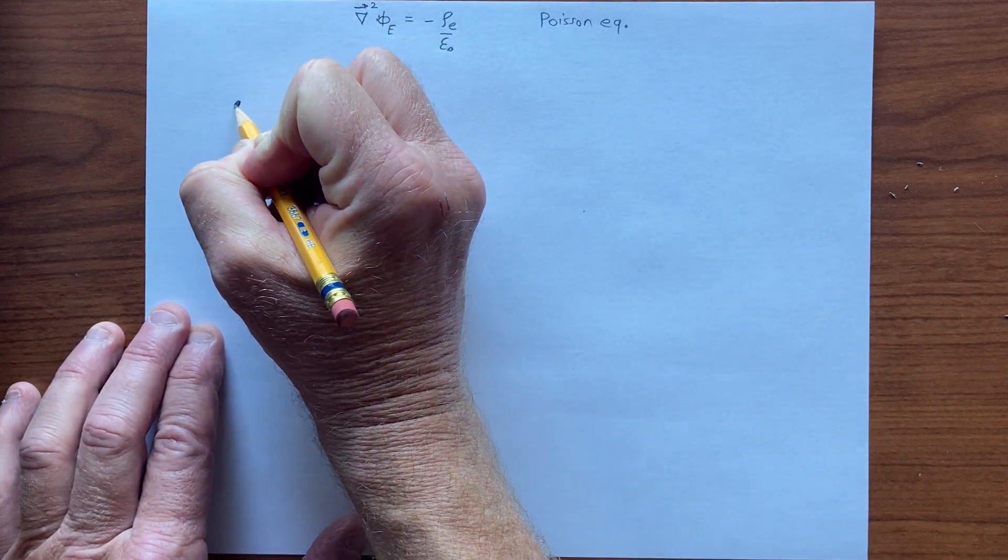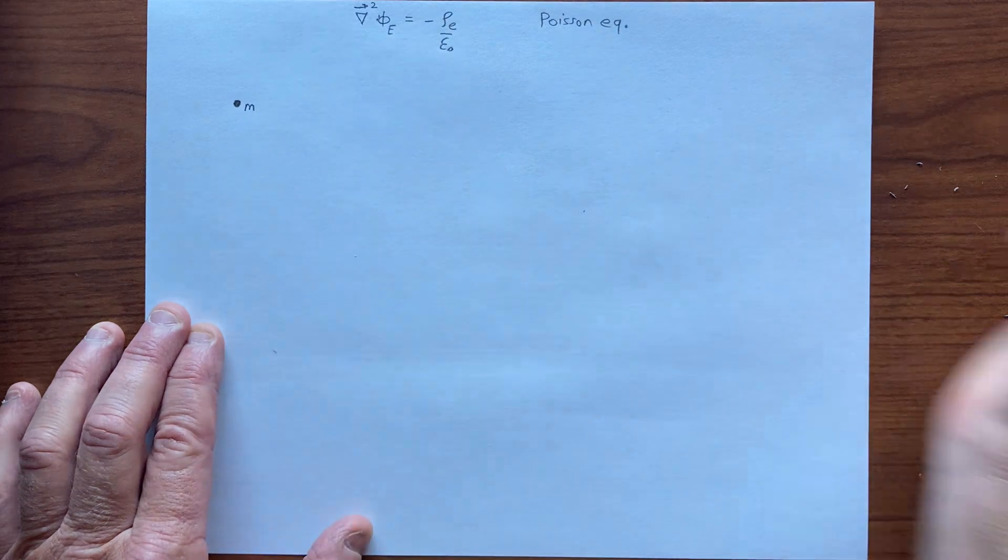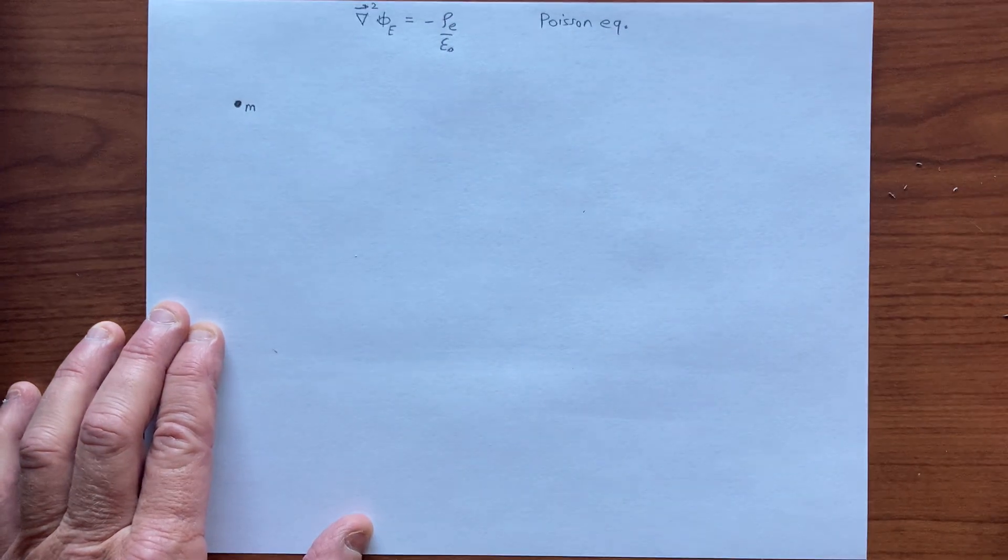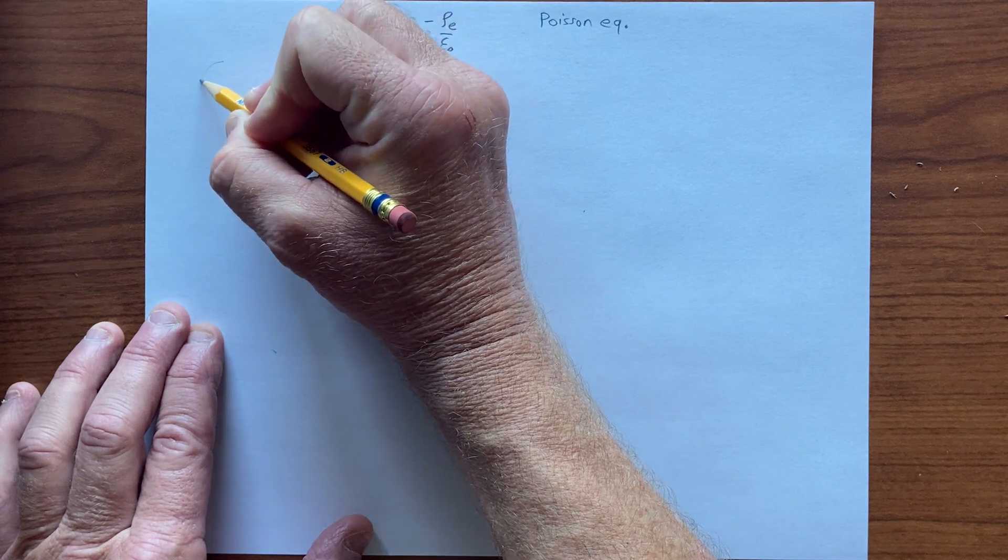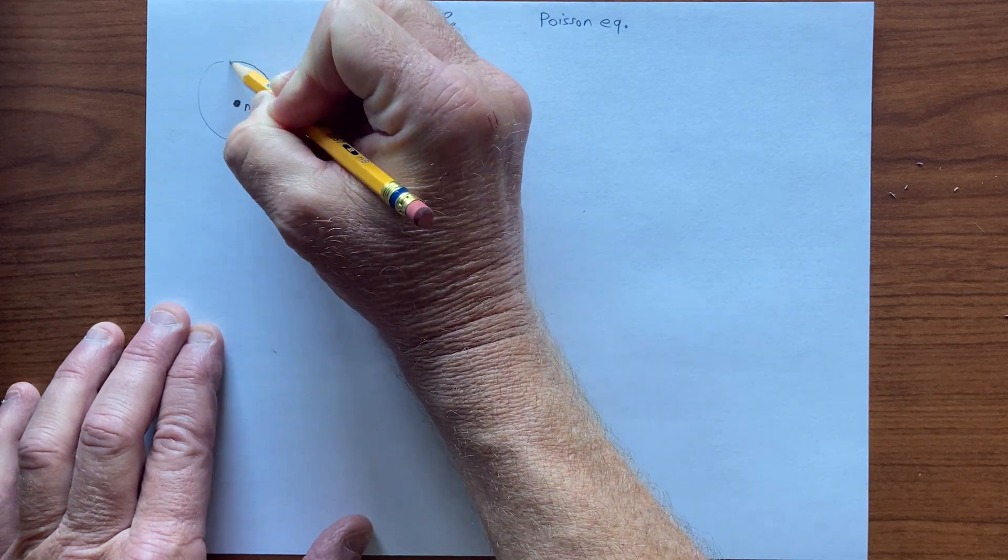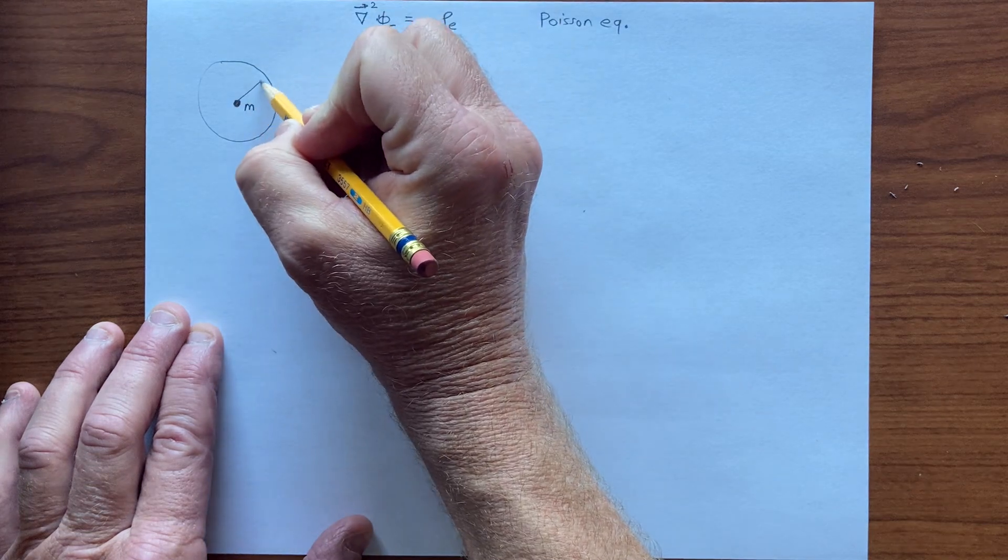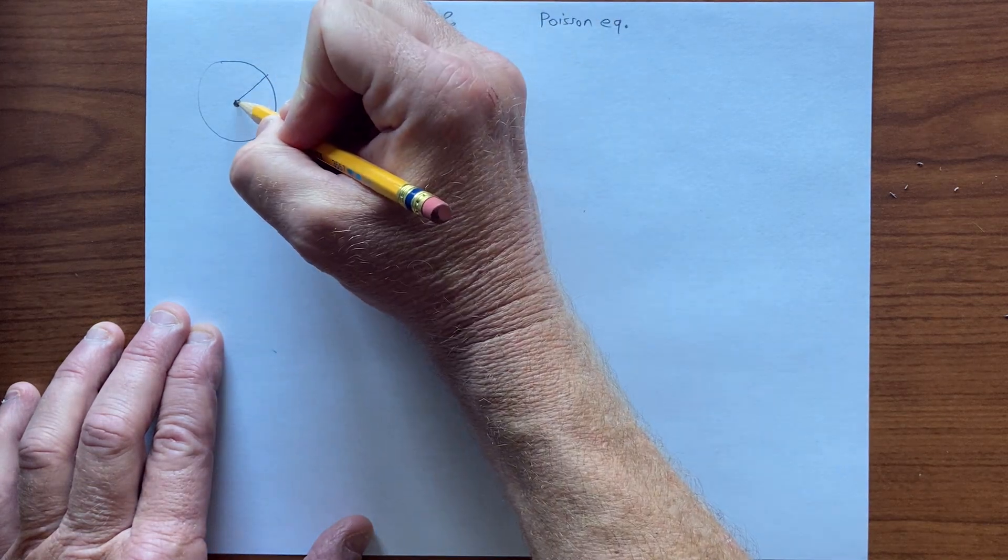So to do that, let's imagine we have a point mass m, and we want to consider a sphere. Mass is at the center of the sphere,